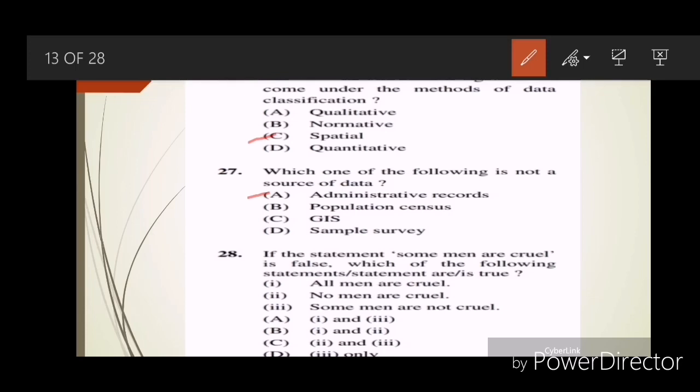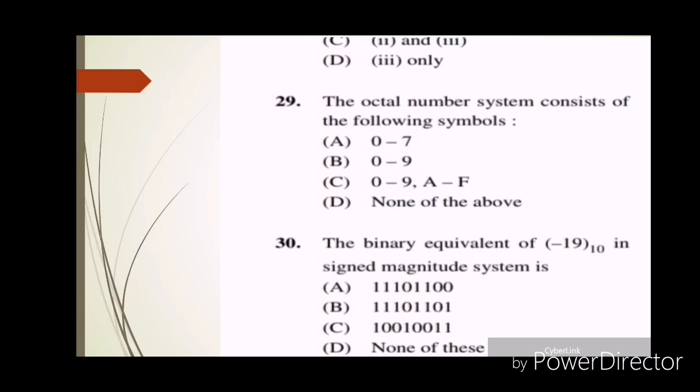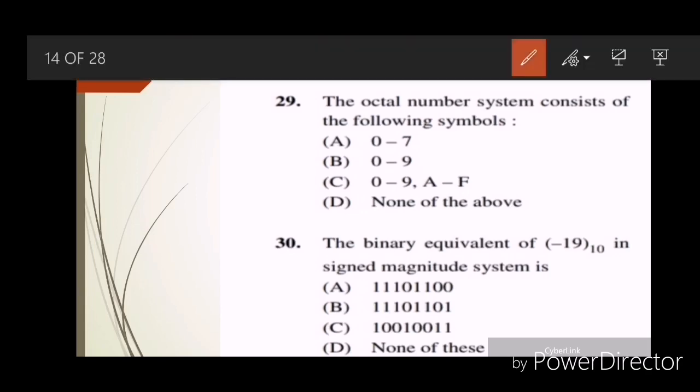Question twenty-nine: The octal number system consists of the following symbols? Answer A, 0 to 7. Question thirty is based on the binary equivalent. Answer is D, none of these.